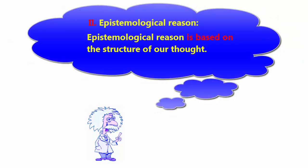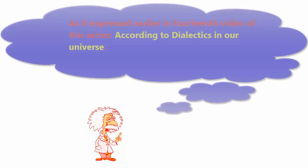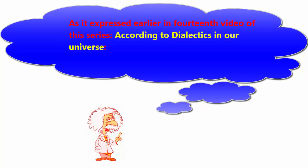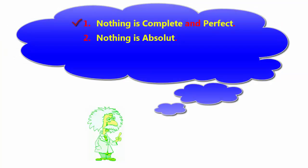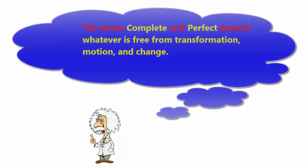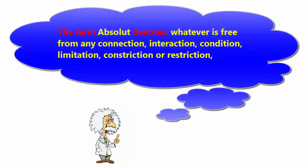The epistemological reason is based on the structure of our thought. A dynamic thought is linked to the dialectical method. According to dialectics, in our universe: 1. Nothing is complete and perfect, and 2. Nothing is obsolete. The terms 'complete and perfect' denote whatever is free from transformation, motion, and change.